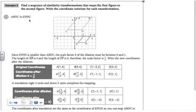This video picks up where the last left off, about one example into the second lesson of module 11, proving similarity using transformations. In example two, they're asking to find a sequence of similarity transformations that would map the first figure to the second.